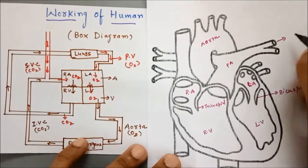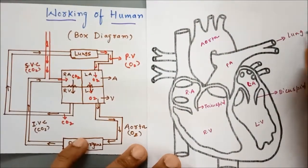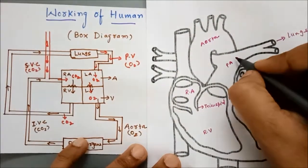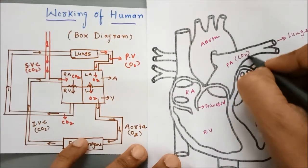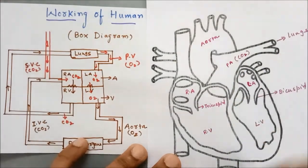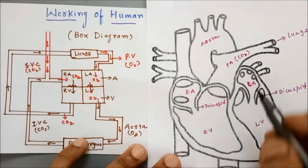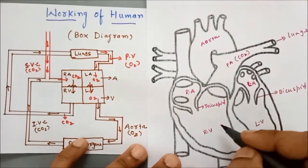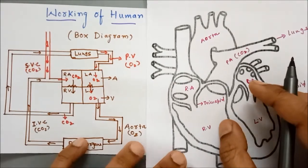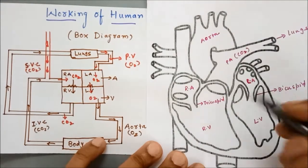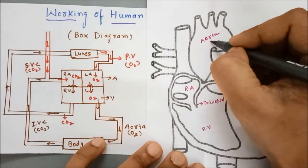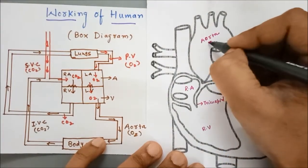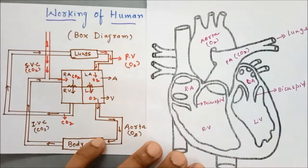The blood that goes to the lungs is of course deoxygenated blood, and from here this is the aorta, and the aorta always contains oxygenated blood.